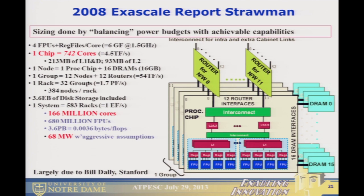In addition, each processor core directly attached 16 DRAM chips — no DIMMs, just 16 independent chips. When you add all that up versus the flops, an exaflop machine ends up with 3.6 petabytes of memory. That sounds like a lot, but when you look at it per core, you'll shudder. With some rather aggressive assumptions — not including energy for cache tag accesses — it came to 68 megawatts, which was the best we could see coming down the road.